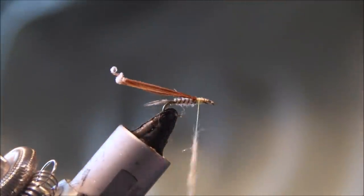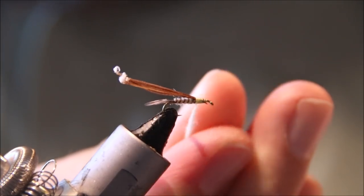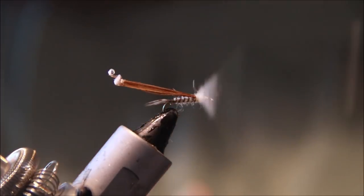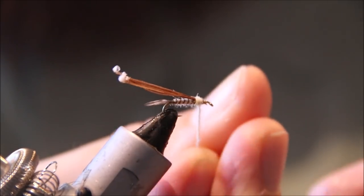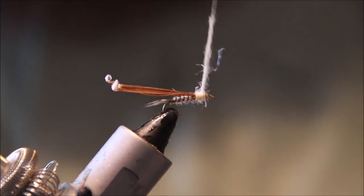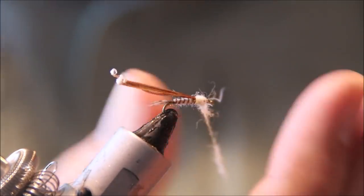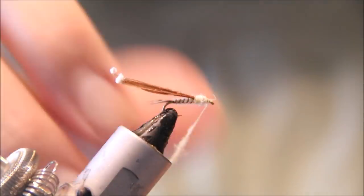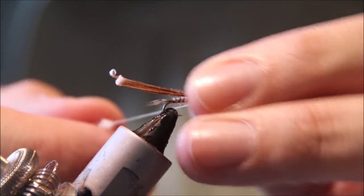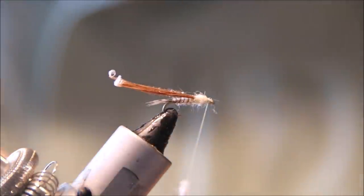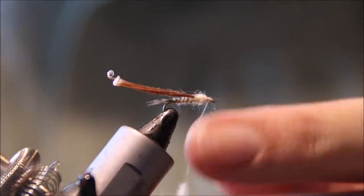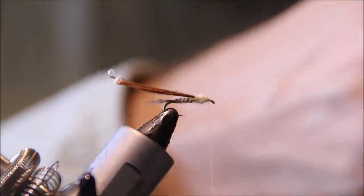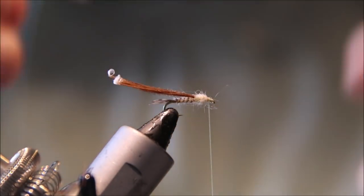I left the extra dubbing from the abdomen. Build a nice thorax, but don't go crazy with the dubbing. The insect is quite slim, so you don't want a big chunky fly. That's one of the problems with a lot of people - they tie imitations like this far too heavily.